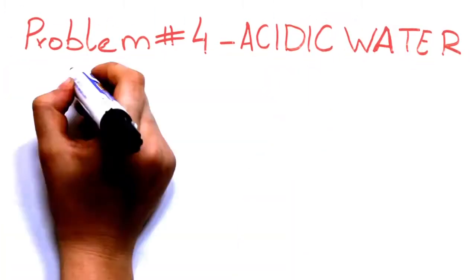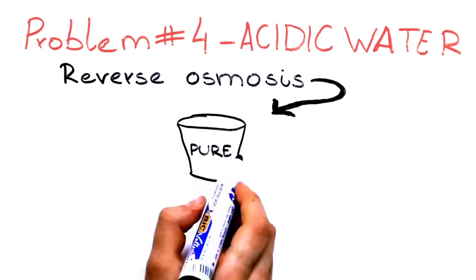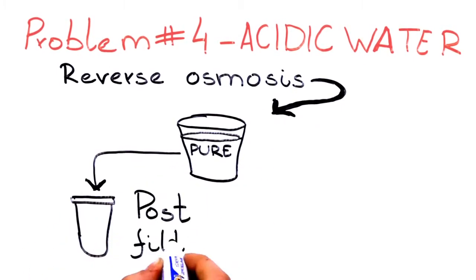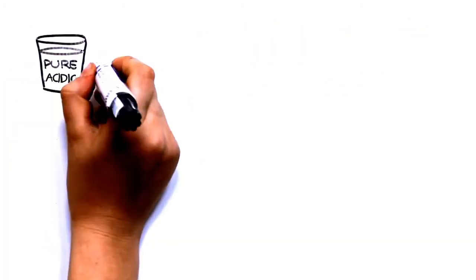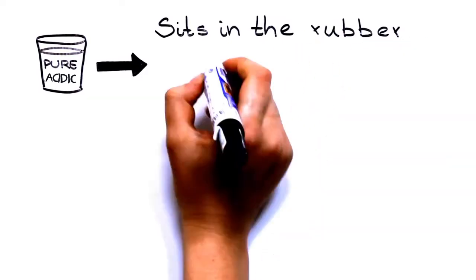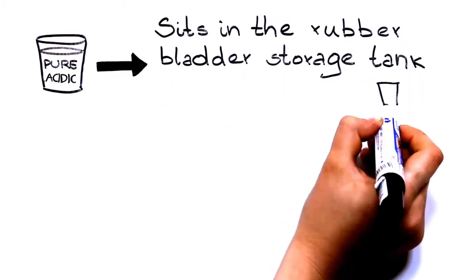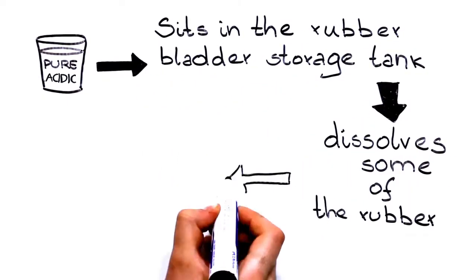Problem number four, acidic water. Water produced by reverse osmosis is pure. So why do all those traditional RO systems use a post-filter? Answer: The highly pure but acidic water produced by the RO membrane sits in the rubber bladder storage tank, dissolves some of the rubber, and repollutes the water.